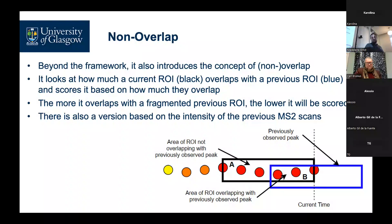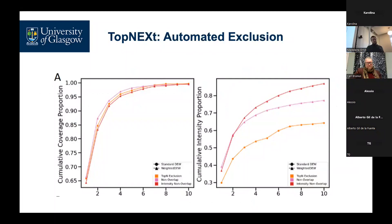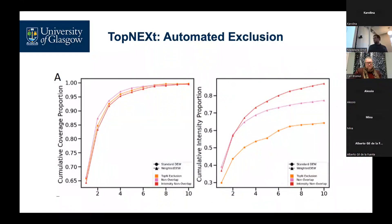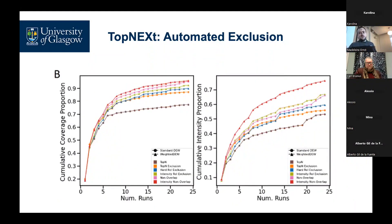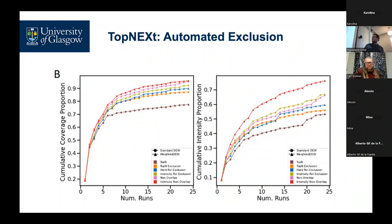We also have a version that works on fragmentation intensity. You don't see massive improvements in the repeated-injection case — the left-hand side shows the proportion of peaks found, and our methods don't perform massively better than Top-N exclusion there. However, we do see much higher fragmentation intensity for our spectra, because instead of fully blocking a re-scan we do allow revisiting something if it's sufficiently interesting. The bigger advantage appears with multiple different samples: with 24 injections of six different beers, all our methods tend to outperform Top-N exclusion — roughly a 10–20% increase in peak coverage, and a much bigger improvement in the quality of the actual fragmentation spectra.